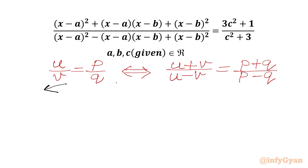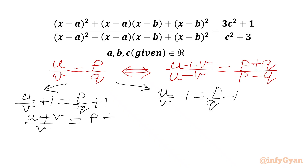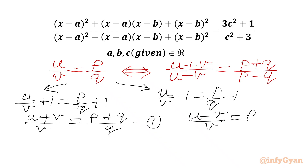I am going to add 1 and subtract 1 to both sides. So I will write u over v plus 1 equal to p over q plus 1, and u over v minus 1 equal to p over q minus 1. Taking LCM, we get u plus v over v on the LHS — call this equation number 1. And u minus v over v equal to p minus q over q — equation number 2.